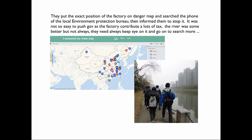They put the exact position of the factory on the data map and searched for the telephone number of the EPB, trying to push them to stop the factory's pollution. But it's not so easy — there are complex relationships between the government and the factory, involving tax, corruption, and other reasons. So they need to continue pushing and searching for more pollution instances. This is the current data map — it can help find pollution around and gather neighbors to address it.